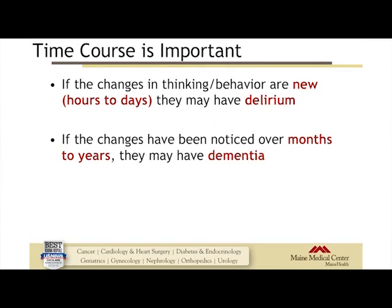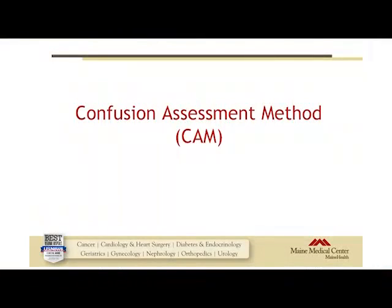Delirium is important because it may be reversible if the underlying causes are identified and treated. Dementia, by contrast, is an often slow, irreversible process causing progressive loss of memory, problem solving, and word finding, and must be severe enough to impact daily function. Time course is key: if changes are hours to days, they may have delirium; if changes have been noticed over months to years, they may have dementia. When you hear 'she fell off a cliff' — that mentions acuity suggesting delirium.